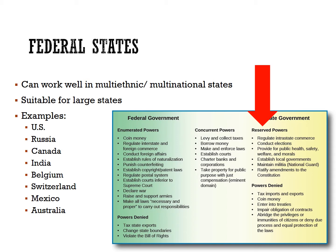The big picture here is that in a federal system, multiple sub-national units have local control but are unified by the central government to pursue common goals at the national level. By distributing power, a federalist government reduces core-periphery tensions by allowing sub-national units a great deal of latitude in passing and enforcing laws and regulations.